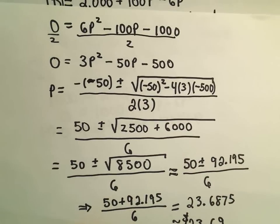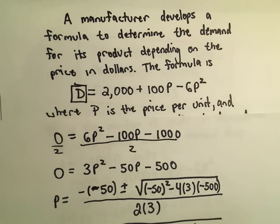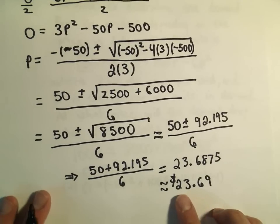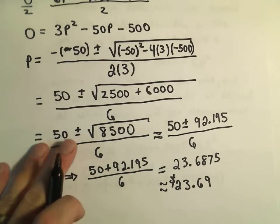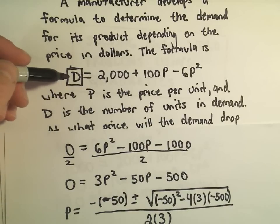So in this case, assuming we're talking about dollars, and we did specify we did say dollars up here, if they make the price per unit approximately $23.69, that is when the total demand for this object will drop to 1,000 units.